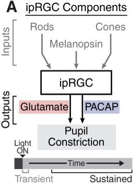Although many researchers consider light to be the strongest cue for entrainment, it is not the only factor acting on circadian rhythms. Other factors may enhance or decrease the effectiveness of entrainment. For instance, exercise and other physical activity, when coupled with light exposure, results in a somewhat stronger entrainment response. Other factors such as music and properly timed administration of the neurohormone melatonin have shown similar effects.